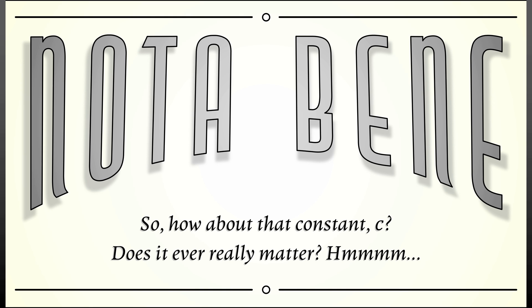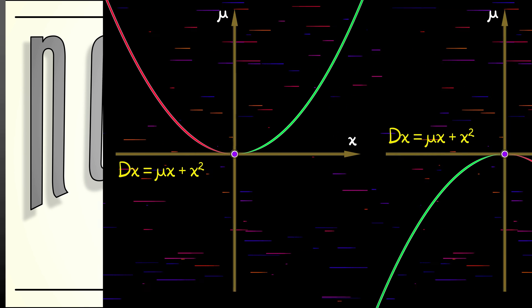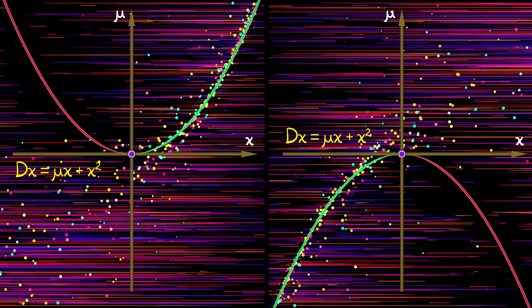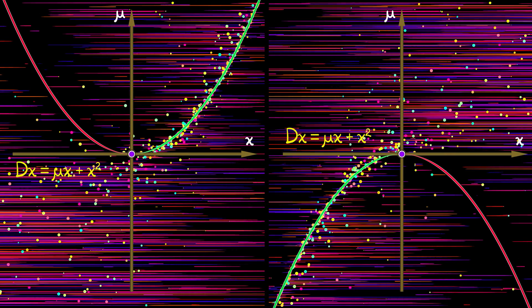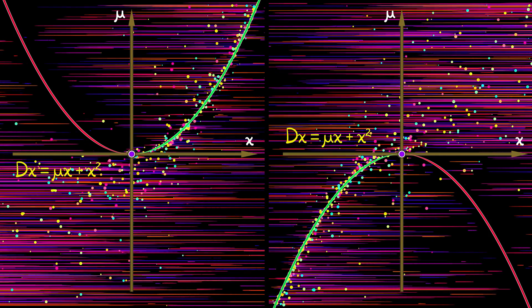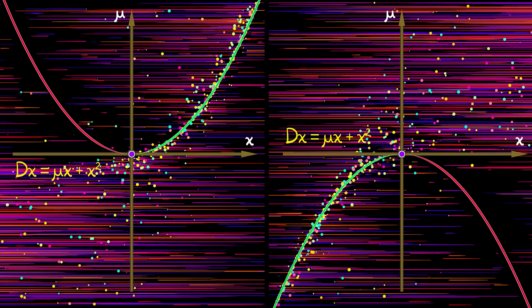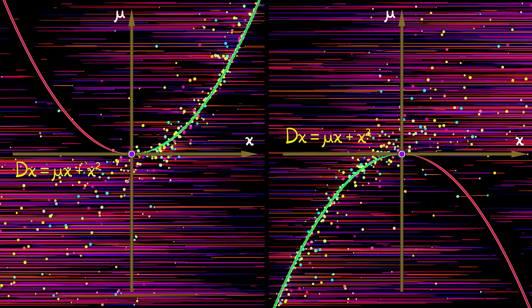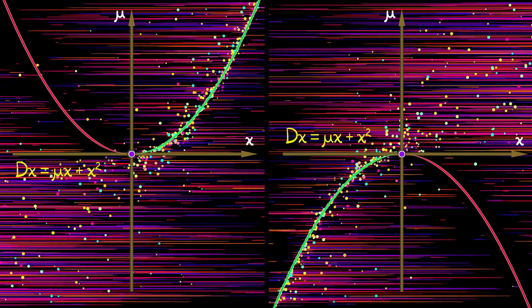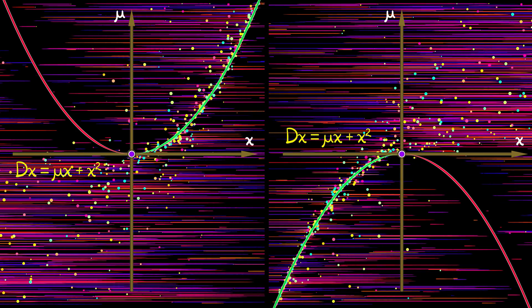If we go back and think about the saddle node and look at what happened when c was negative versus what happens when c is positive, then that diagram in the x mu plane, it flips upside down. The stabilities were all reversed, but the same basic structure is in place. You're going from two equilibria, one stable, one unstable, to zero equilibria.